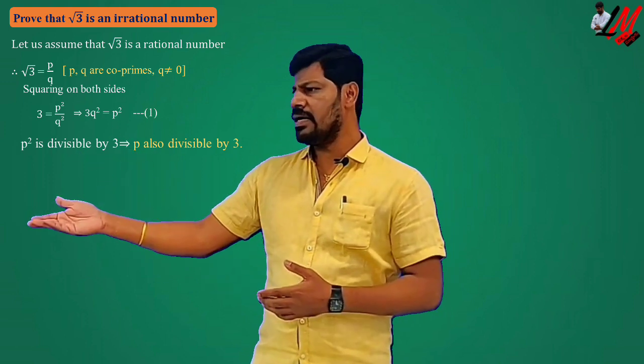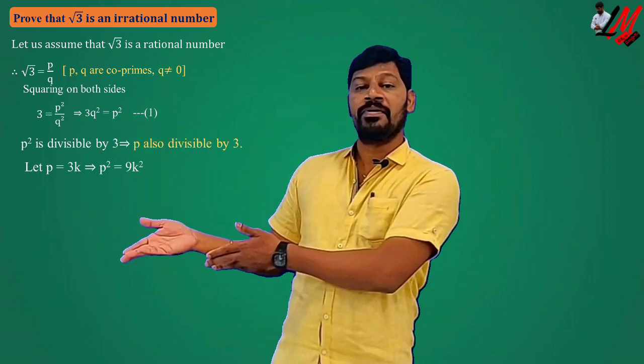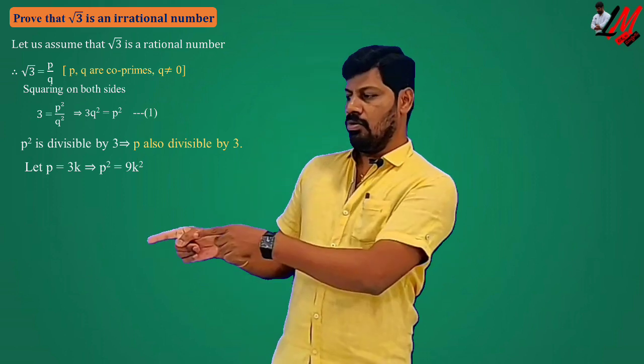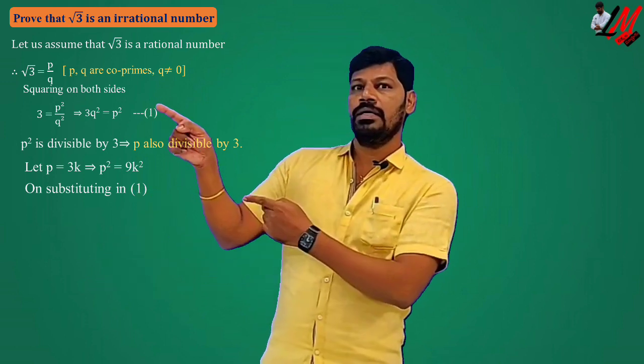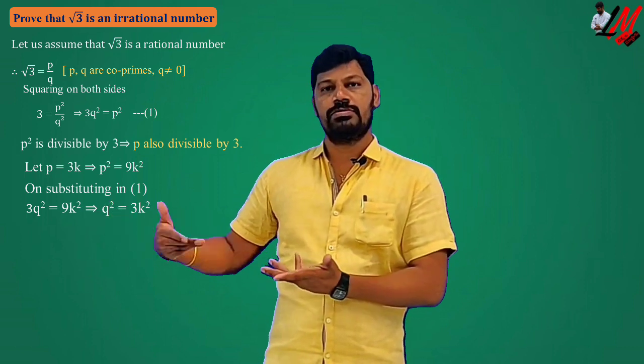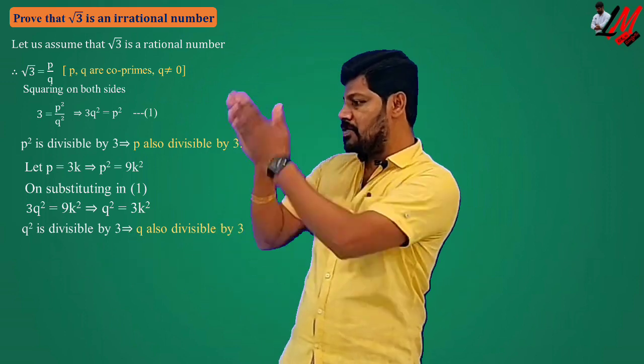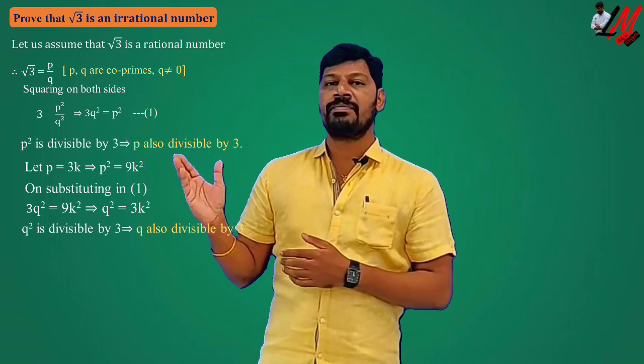If p is divisible by 3, we can write p equals 3k for some integer k. In equation 1 we have p², so substituting: p² equals 9k². Now replacing p² with 9k² in equation 1, we get 3q² equals 9k². Simplifying, we get q² equals 3k², which means q² is also divisible by 3. When q² is divisible by 3, as we mentioned, q is also divisible by 3.